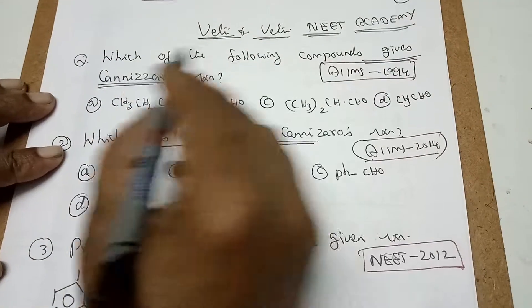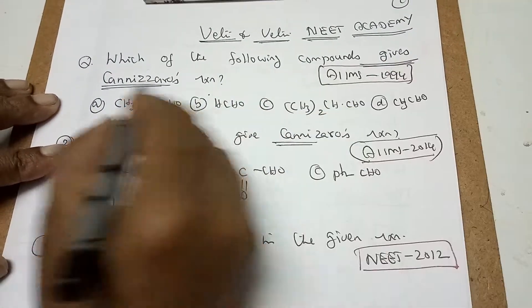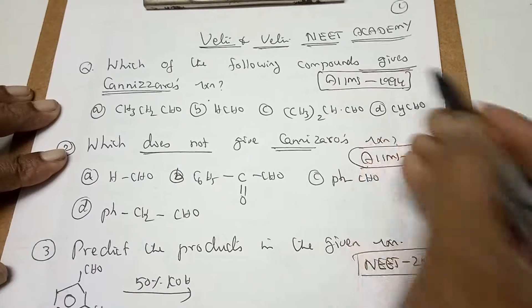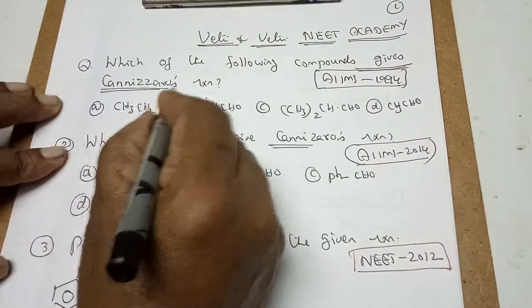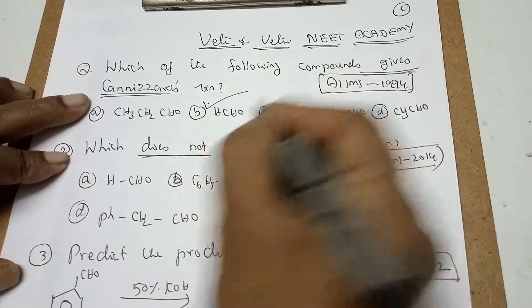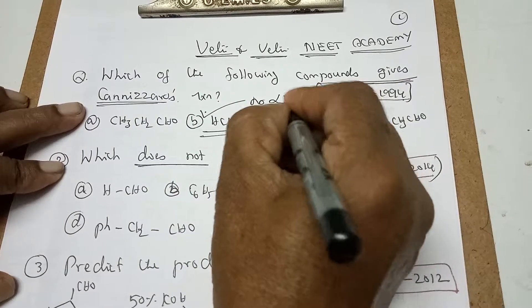Now let us see what are the important questions so far covered in the previous year question papers. First question, which of the following compound gives Cannizzaro? AIIMS 1994 gives Cannizzaro, that means called as formaldehyde. There is no alpha hydrogen.